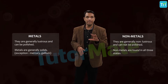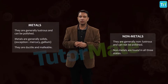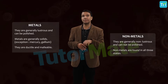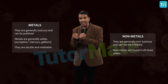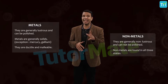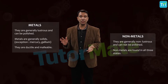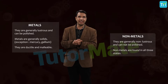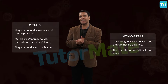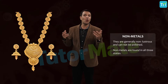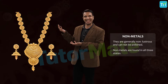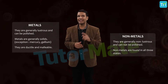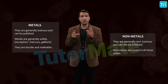Metals are malleable — that means metals can be stretched or bent into different shapes, and they can even be hammered down to thin sheets. Gold and silver are the best examples of this property, which is why we have different designs in gold and silver jewelry.